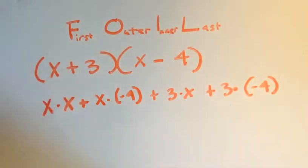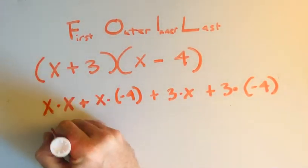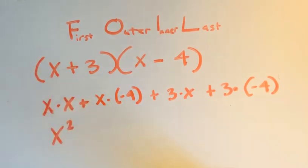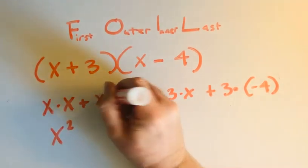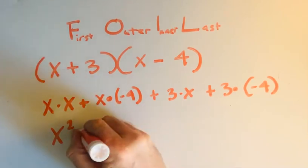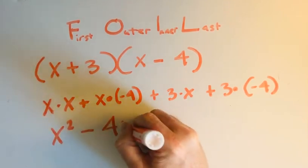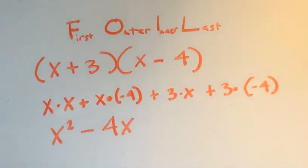Now I'm going to simplify. x times x is x squared. This is x times negative 4, that's negative 4x.